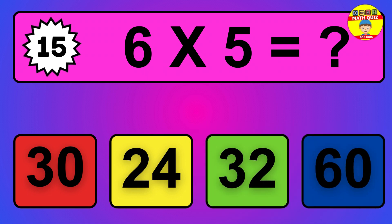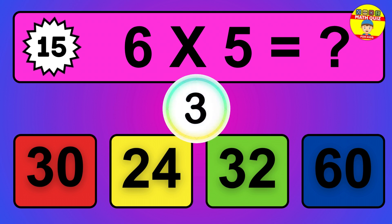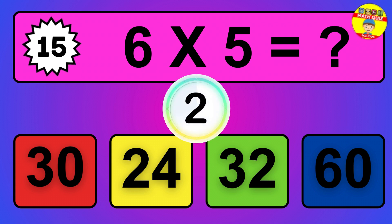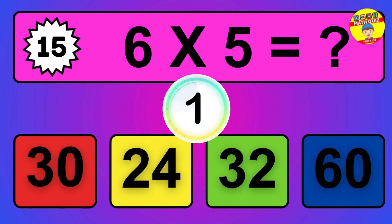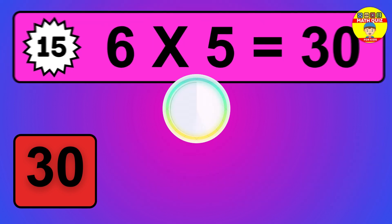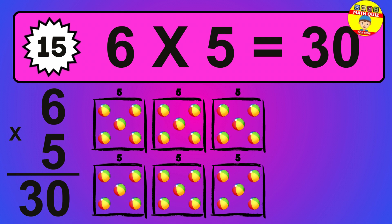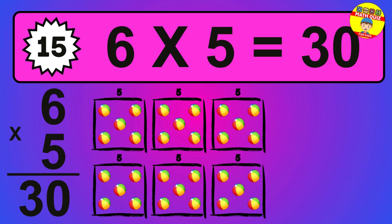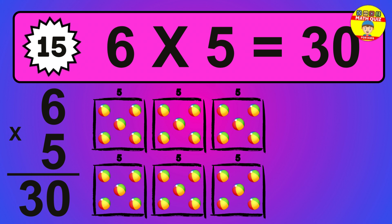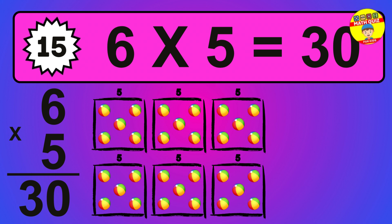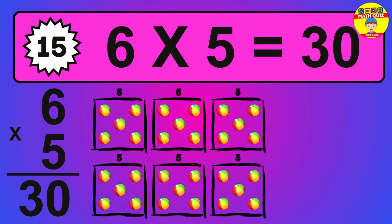Question 15. 6 times 5 equals what? So the answer is 6 times 5 is 30. To calculate, we have 6 groups with 5 balls each one. So how many balls do we have? 30 balls.